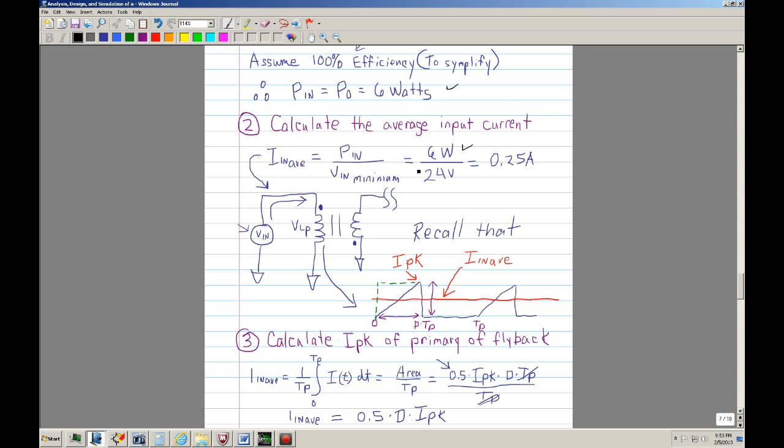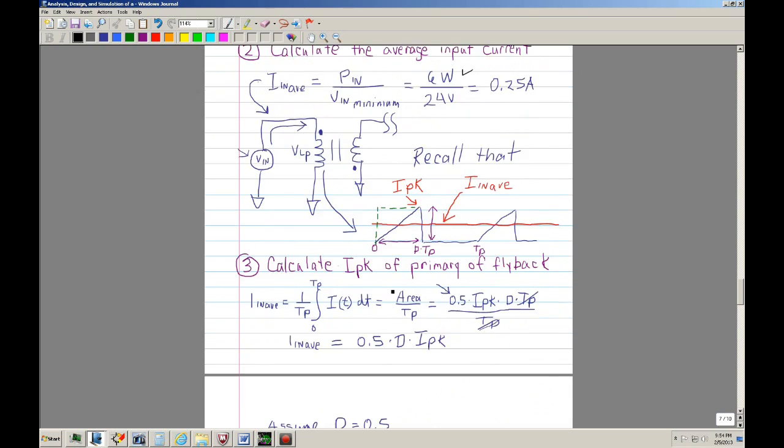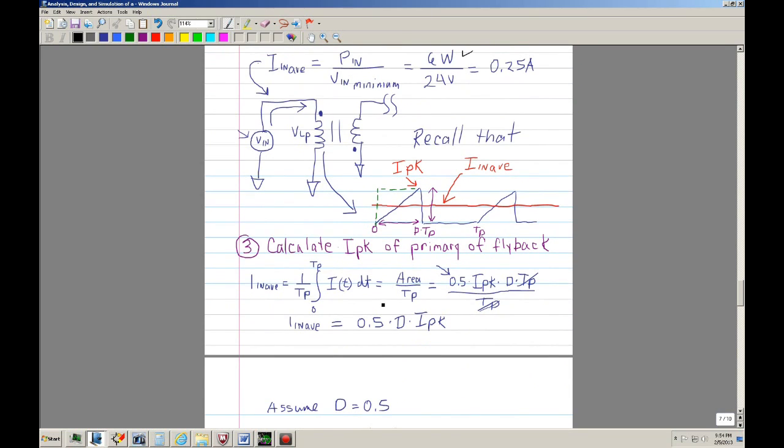This is where we use the assumption of 100% efficiency, just to simplify it. With that, then we can assume that the input power is also going to be 6 watts. Once we have the input wattage, which is 6 watts, and we know that the input voltage is 24 volts, with that we can actually calculate the input average current.